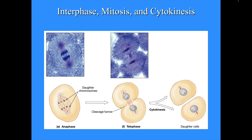In meiosis you have homologous chromosomes being separated. In anaphase, the sister chromatids are being pulled towards the poles. Then at telophase, you're going to see the cleavage furrow beginning, and the nucleus reintegrates. Then cytokinesis occurs where the two daughter cells have actually split. Notice that the two daughter cells have identical genetic information because they each have one of the sister chromatids in each cell.